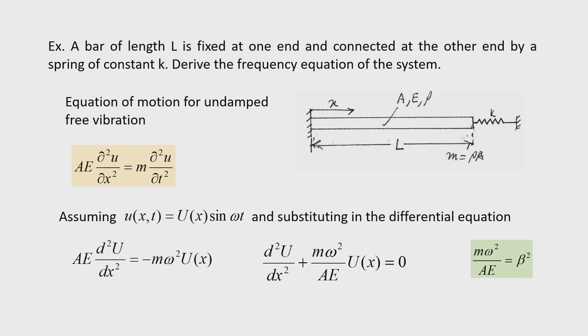Let us discuss one by one. The first problem: a bar of length L. The length of the bar is L and the area of cross section is uniform throughout. E is the modulus of elasticity, rho is the density of the material, and mass per unit length m = rho × A, which gives units of kg/m.